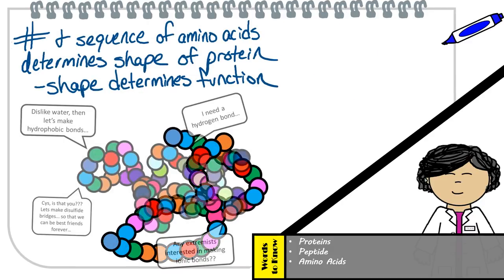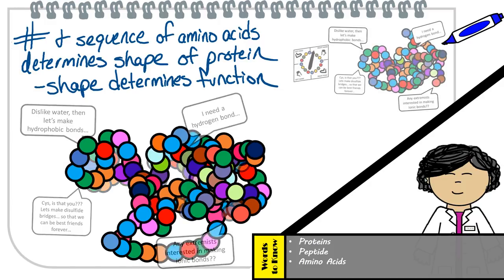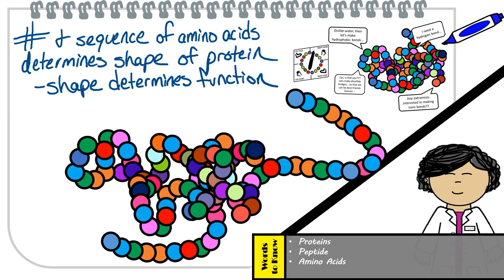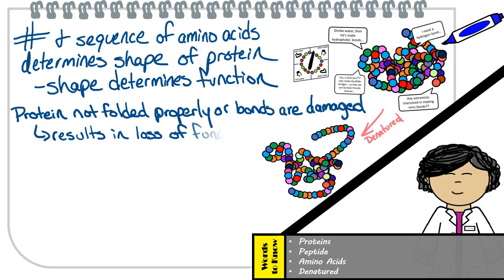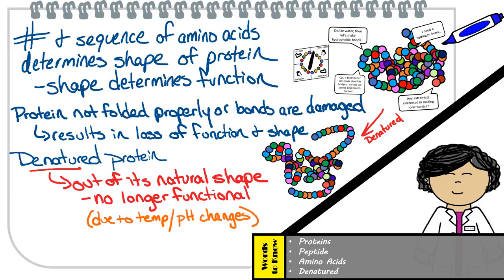The number and sequence of amino acids in the polypeptide chain is going to determine how the chain will fold, giving the protein a unique shape. This unique shape is directly related to a protein's function. Thus, if a protein is not folded properly or some bonds are damaged, the protein is no longer functional — which is what happens to denatured proteins. They lose their unique shape, meaning the protein is now out of its natural shape and is no longer functional. This may happen when high temperatures are reached or the optimal pH is out of balance.